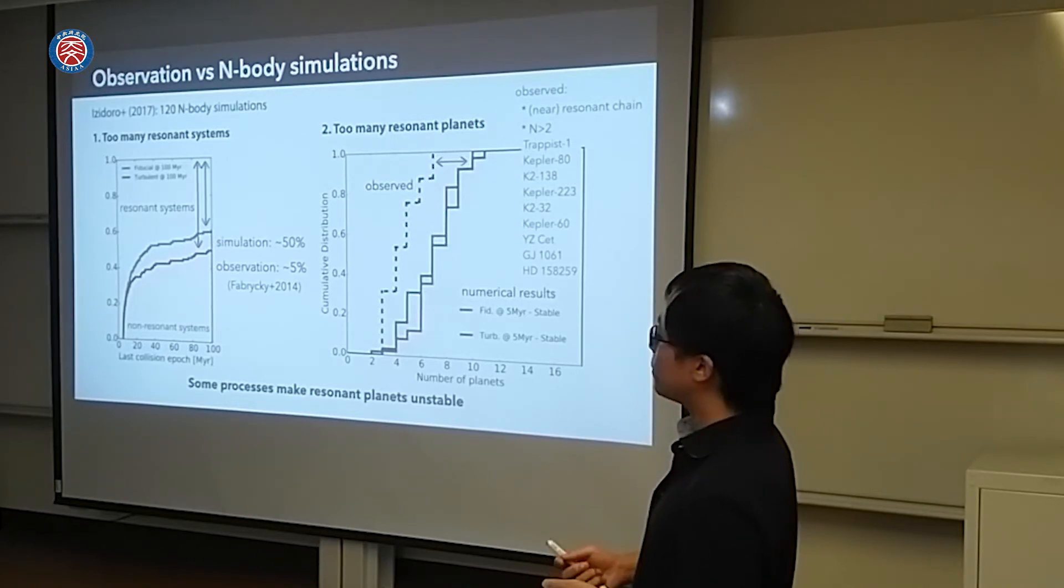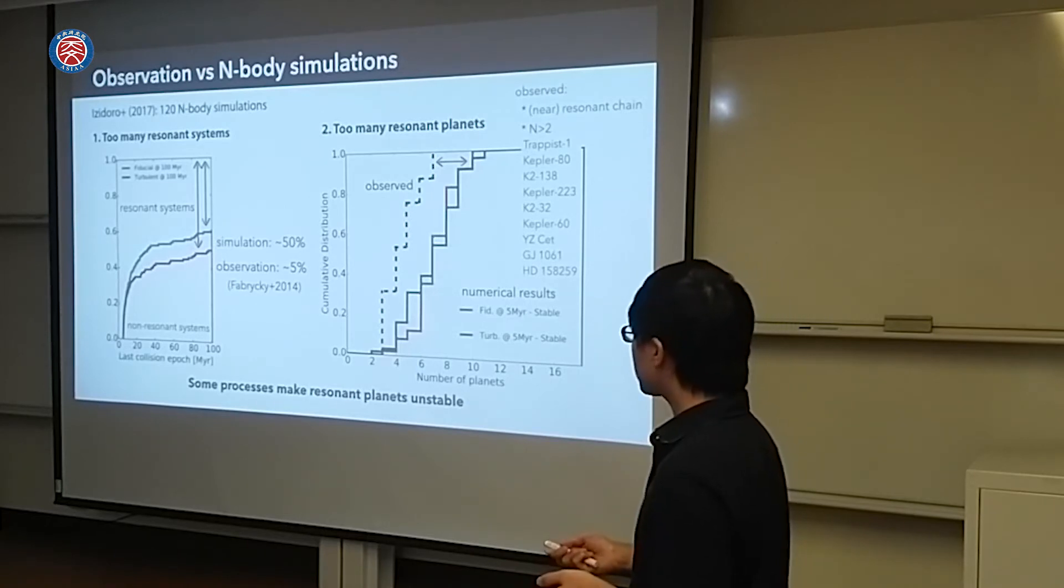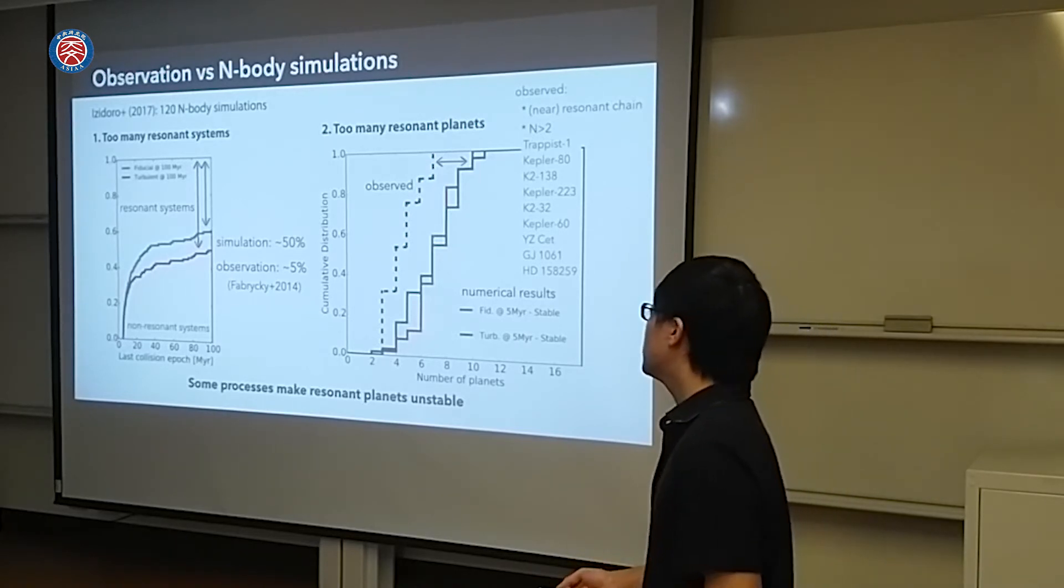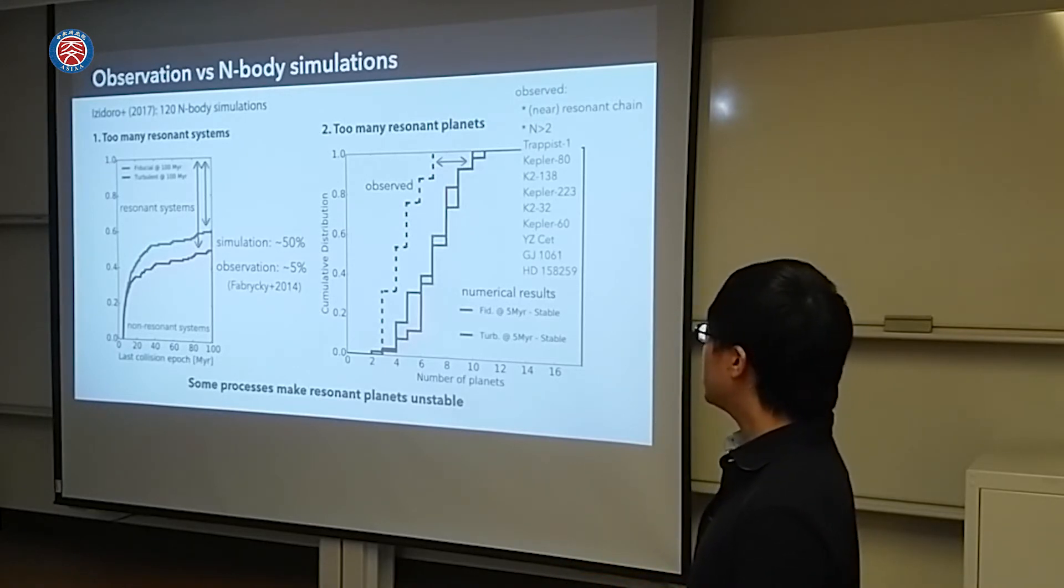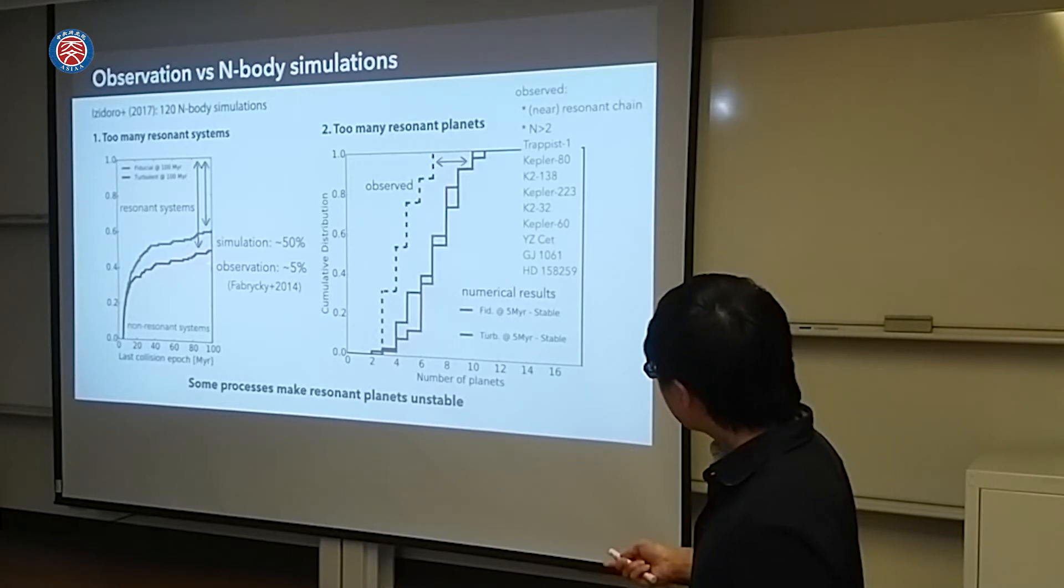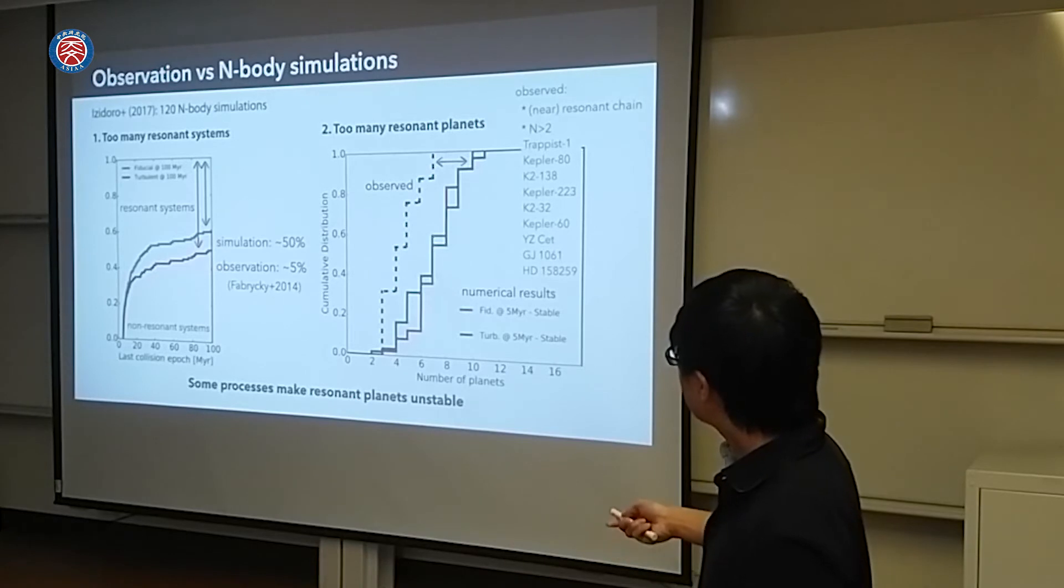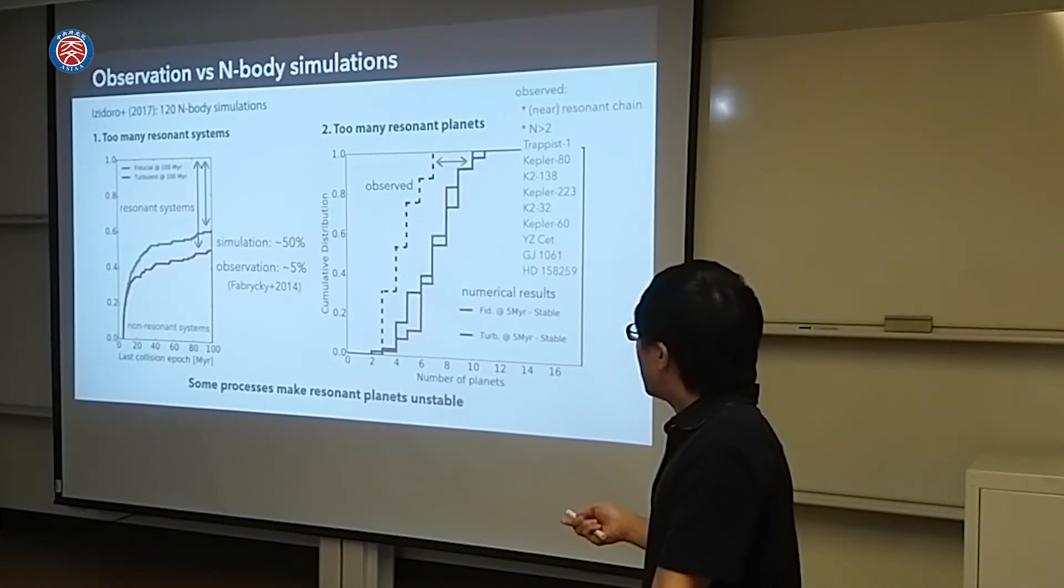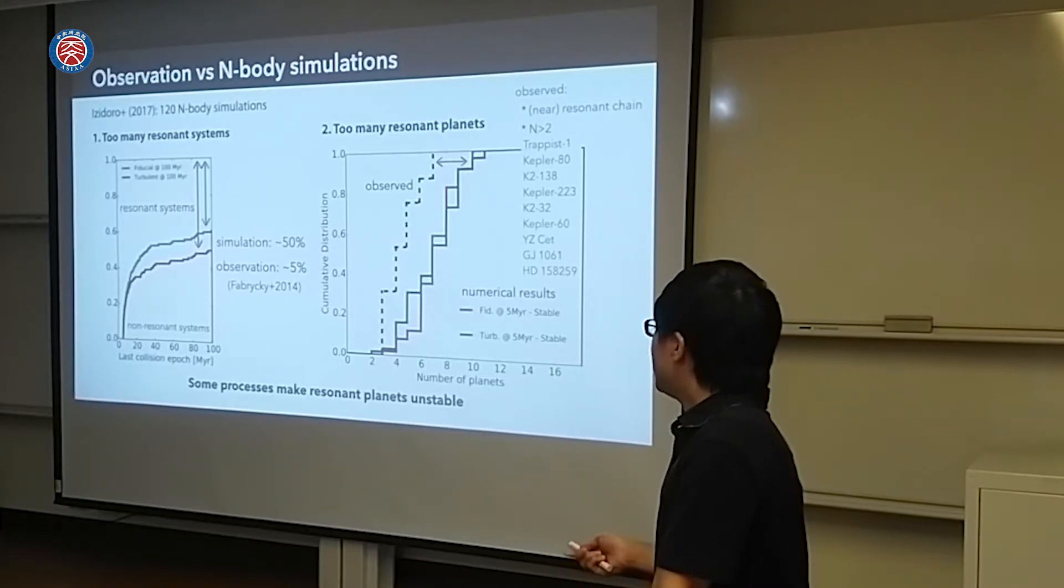But there are some differences between observed planets and the numerical result. We saw about 120 N-body simulations showing the statistical numerical result. They confirm that there are two differences. One is too many resonant systems are found in numerical simulations. This is a result of numerical simulation. These systems under these lines are non-resonance systems. Apart, these are fractional-resonance systems. This shows there are about half-resonance systems. Observationally, there are only 5%. This is very large difference.